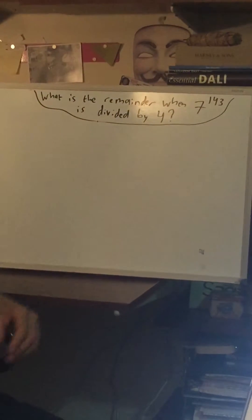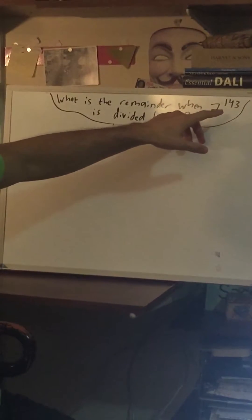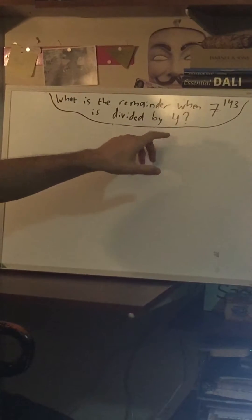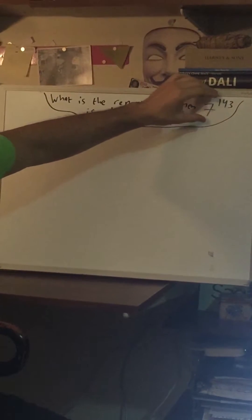In this video we're going to examine the question of finding the remainder of 7 to the 143rd power divided by 4. Now this is related to the previous video of finding the units or ones digit of this number.